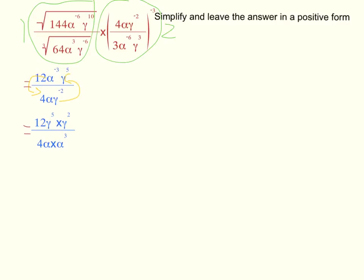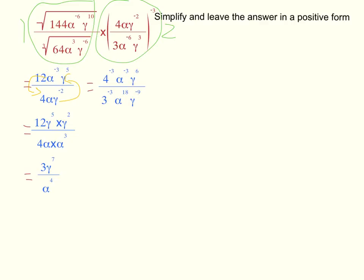Now simplify the numerator and simplify the denominator. After simplifying section 1, this should be your answer. Now let's move on to section 2. The first thing I need to do for section 2 is raise the power of negative 3 to the numerator and the denominator. After raising the power of negative 3 to the whole bracket, you should get this answer. The question asks us to leave the answer in positive form, so all the negatives from the numerator we move to the bottom and all the negatives from the denominator we move to the top.